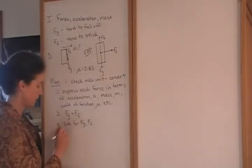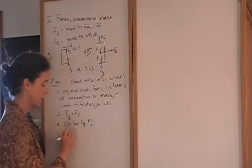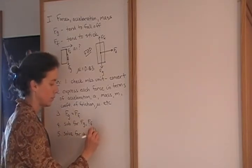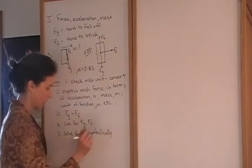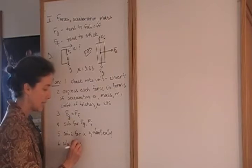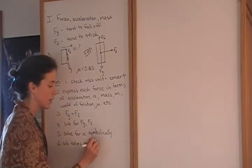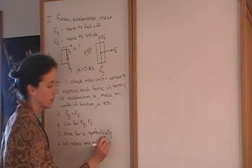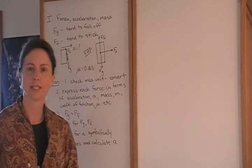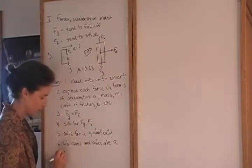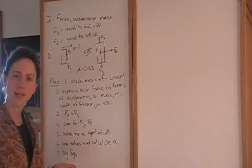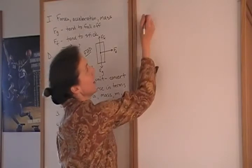Then we can solve for the acceleration, still symbolically. Then we can substitute specific values and calculate A. Finally, before we report our answer, we want to consider how many significant digits we should include. All right, now that we have a plan, let's put it in place as we evaluate the problem.